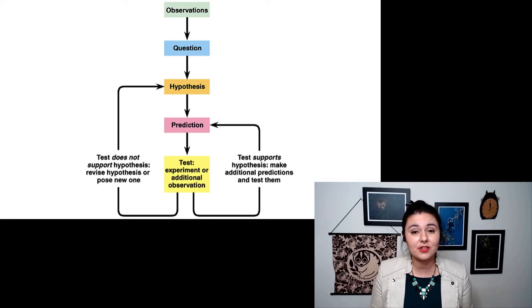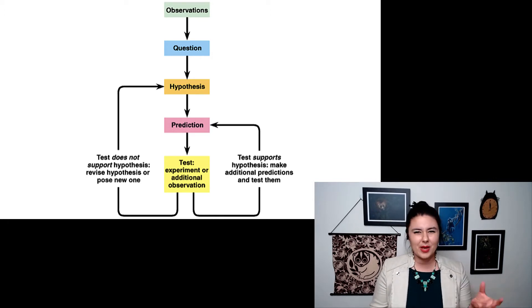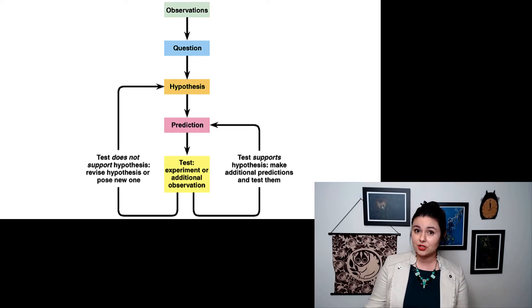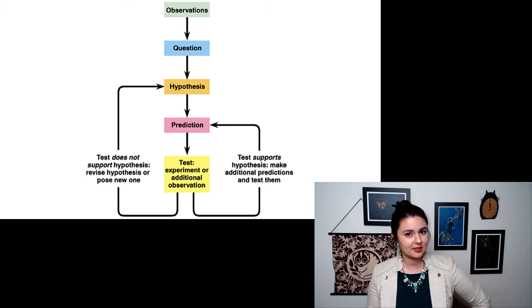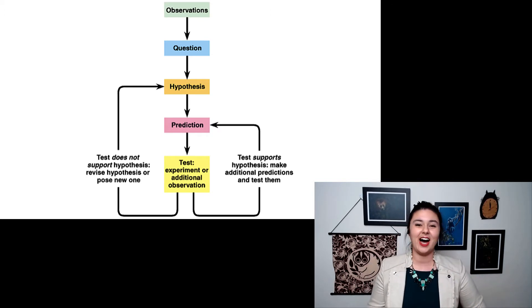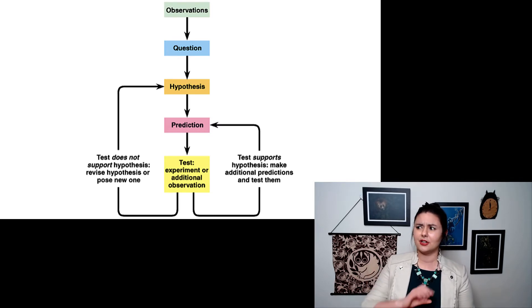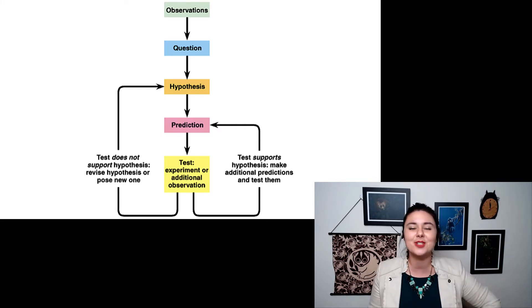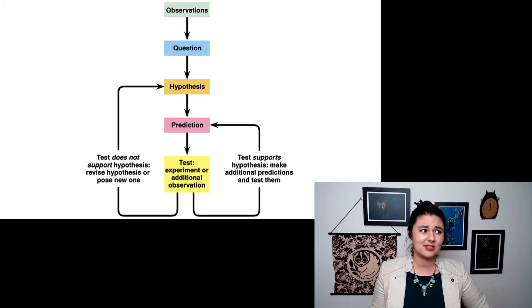Our process when we're doing hypothesis-based science looks a little bit like this. We start with observations - there's a lot of knowledge that's already out there. Once you have that base knowledge, now you can come up with a question. From that question, you want to come up with a hypothesis, and that hypothesis should lead to a very specific prediction. If this happens, then I expect to see this other thing. With that prediction, you create an experiment to test it. After you test, you have two options. It could be supported - that's great, then you can go back and make another prediction. More often than not, your hypothesis isn't supported, and then you have to go all the way back up to your hypothesis and revise that and try again. Don't feel bad, it's just how science works.